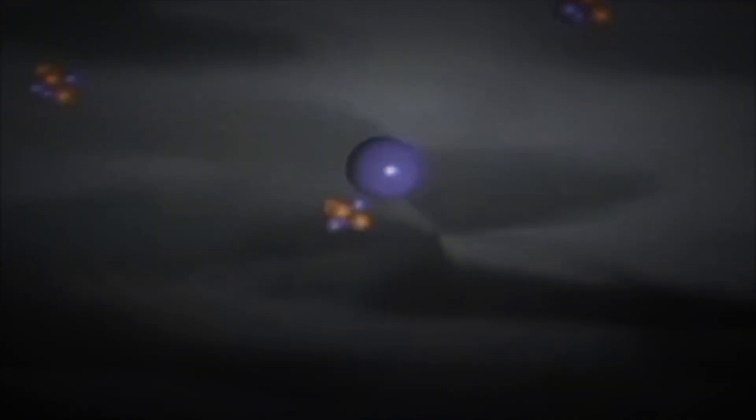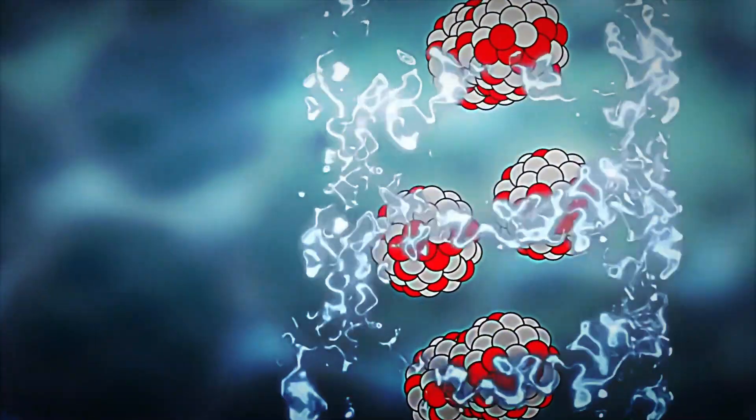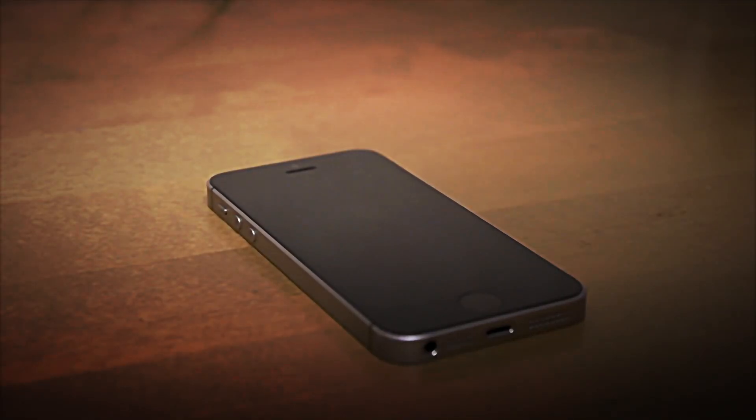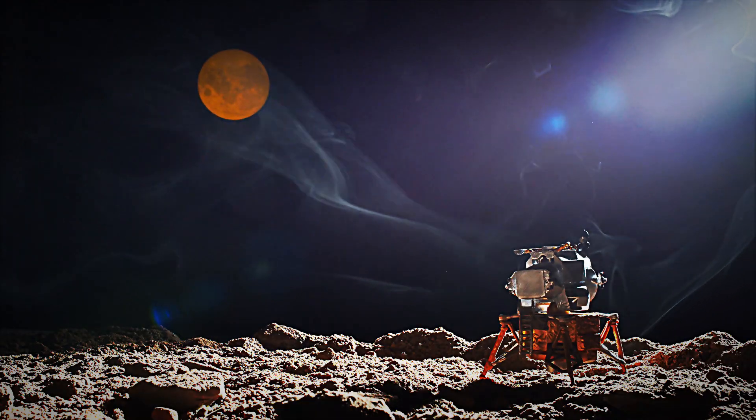Plutonium-238 is an isotope that, when it decays naturally, releases large amounts of heat and alpha radiation. This constant heat can be maintained for decades without interruption, making it an ideal resource for powering devices in places where there is insufficient sunlight, such as on Jupiter's icy moons or in the dark regions of Saturn.